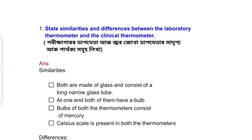At one end, both thermometers have a bulb. The bulb of both thermometers contains mercury. The Celsius scale is present in both thermometers.